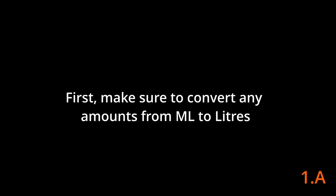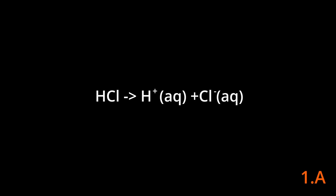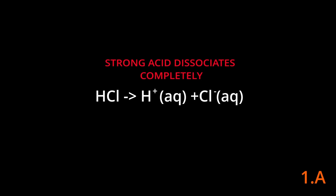For part A we're essentially doing the problem before any titration occurs, so we're going to find the pH of the sample before any base is added. The first step in any of these questions when you're given a volume in milliliters is to convert that into liters by dividing by a thousand. One of the key things to remember about strong acids and strong bases is that they're strong because they completely dissociate. In the case of hydrochloric acid, it completely dissociates in a one-to-one ratio into hydronium. So if we solve for the amount of moles of hydrochloric acid, we're essentially finding the amount of moles of hydronium because it's a one-to-one ratio.